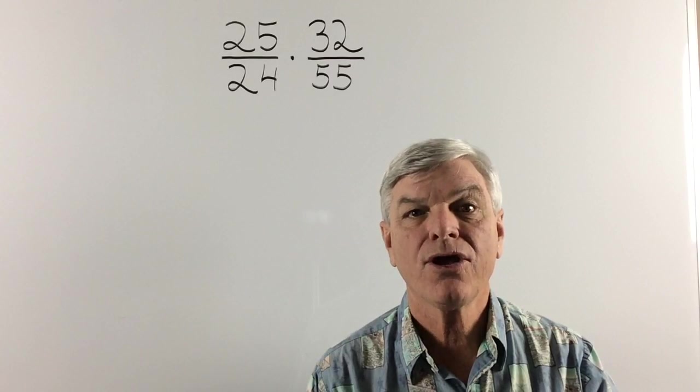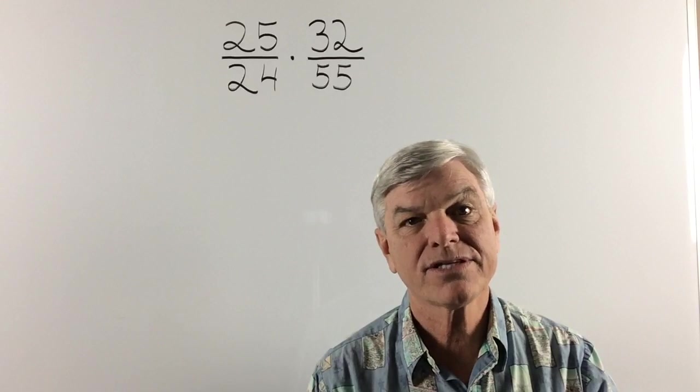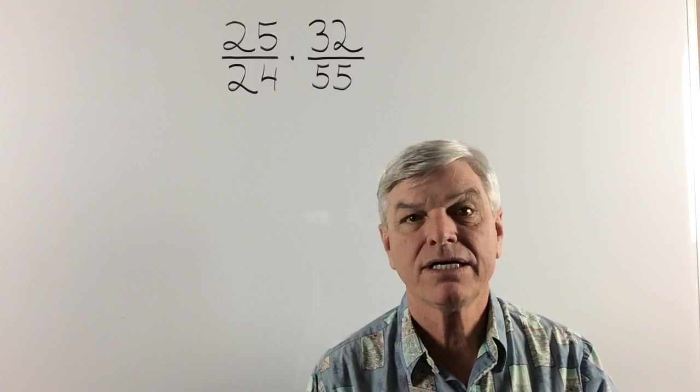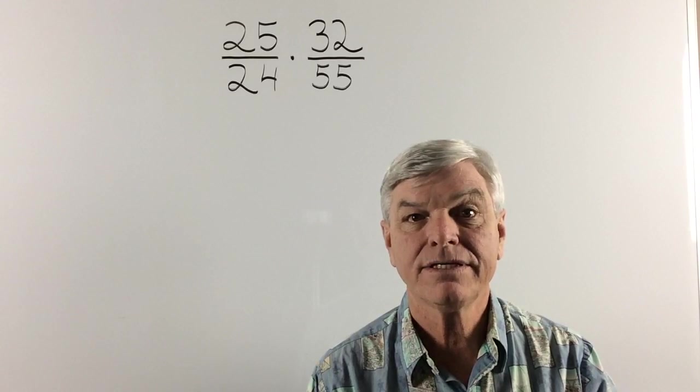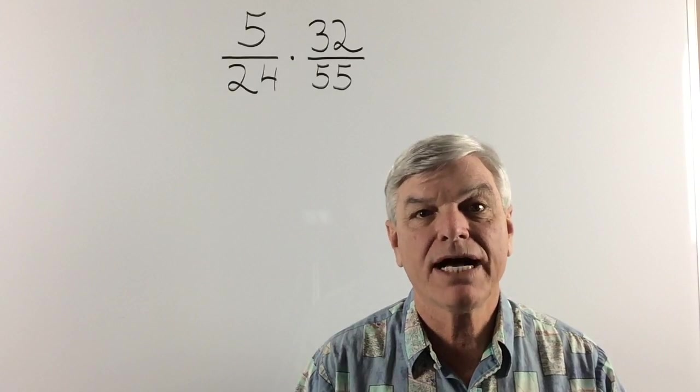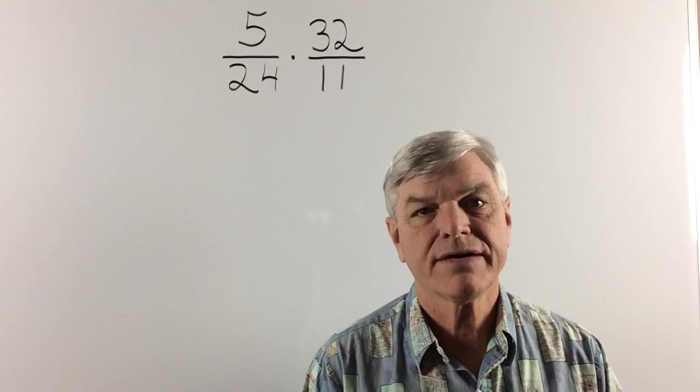In this case, 25 can be reduced by 5. 24 can't be reduced by 5, but 55 can. So let's reduce 25. We're going to divide it by 5. And correspondingly, we're going to divide the 55 by 5. And that will give us 11.